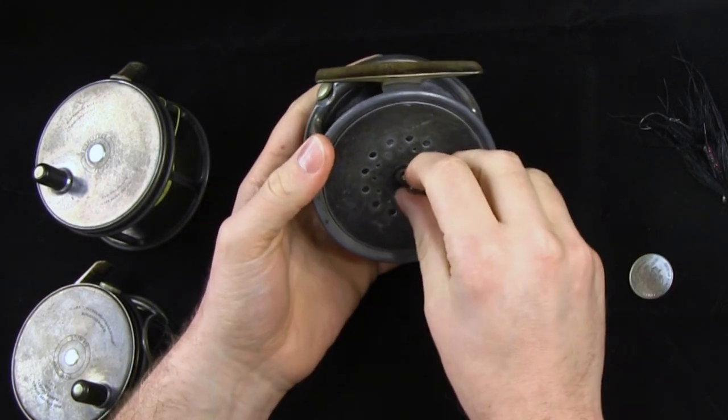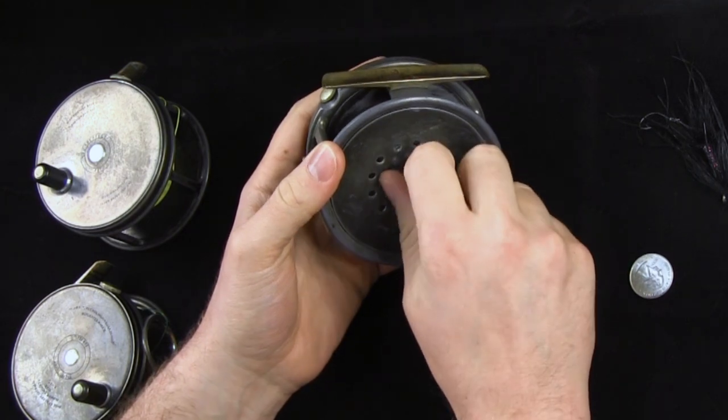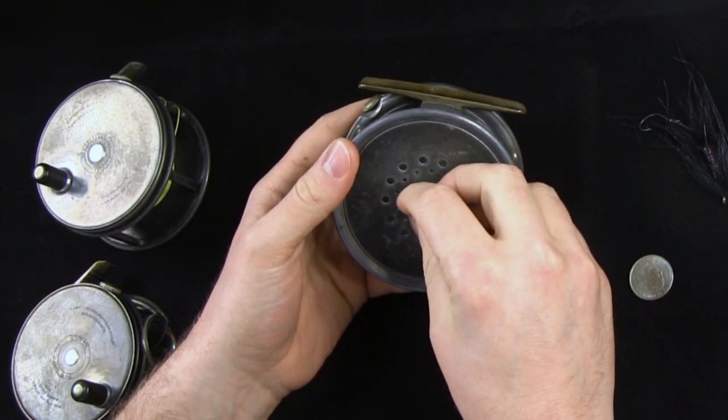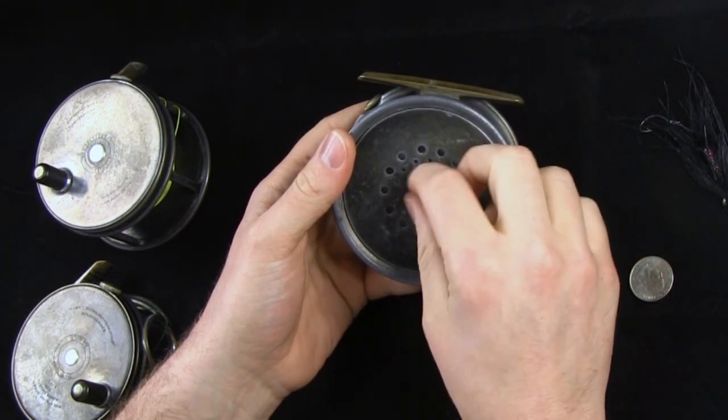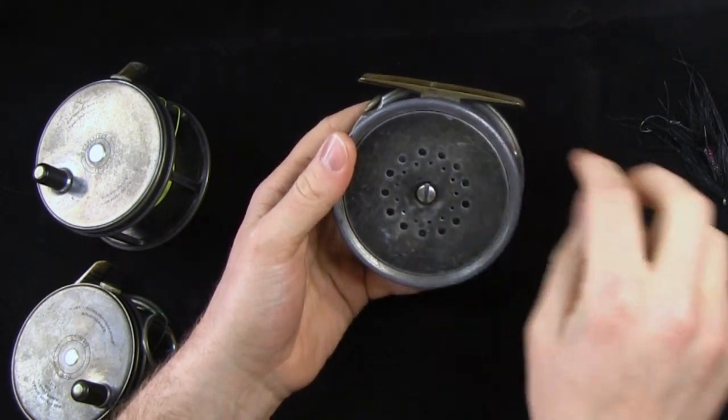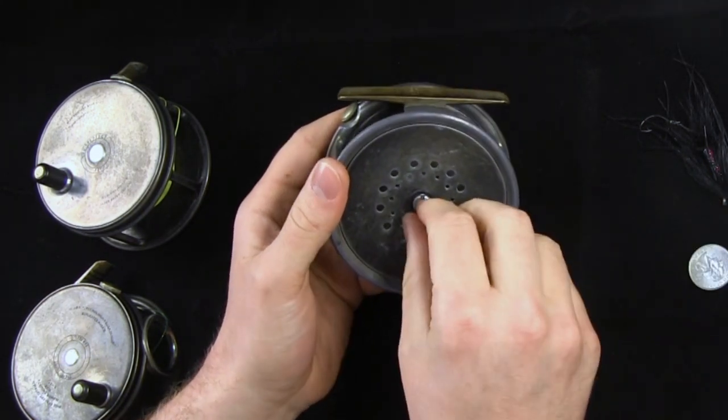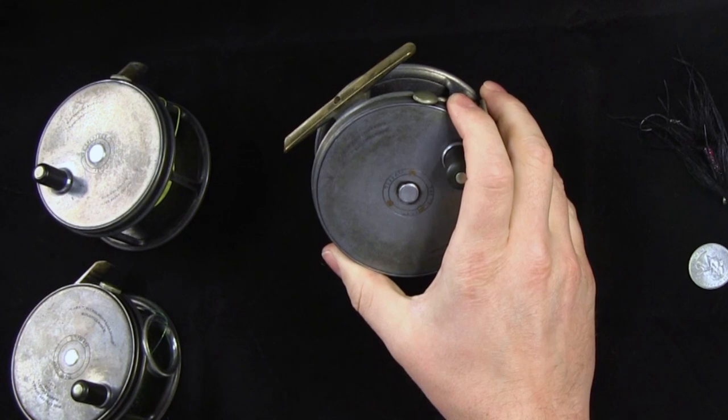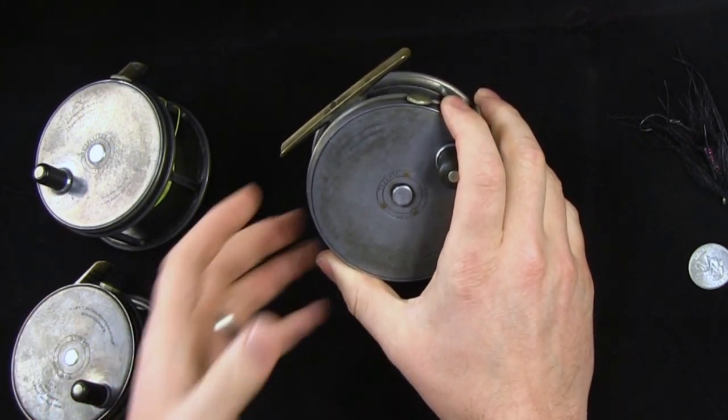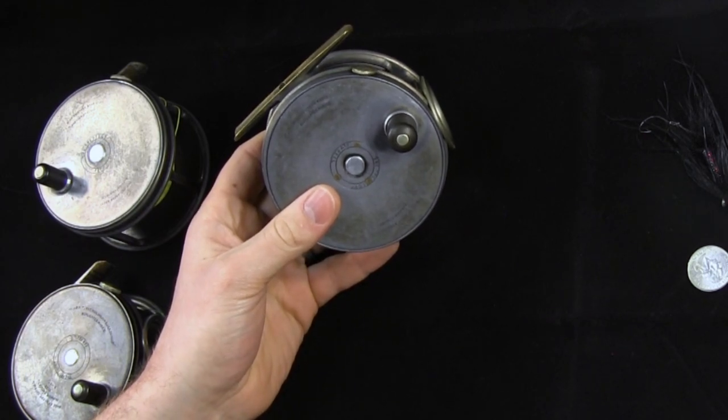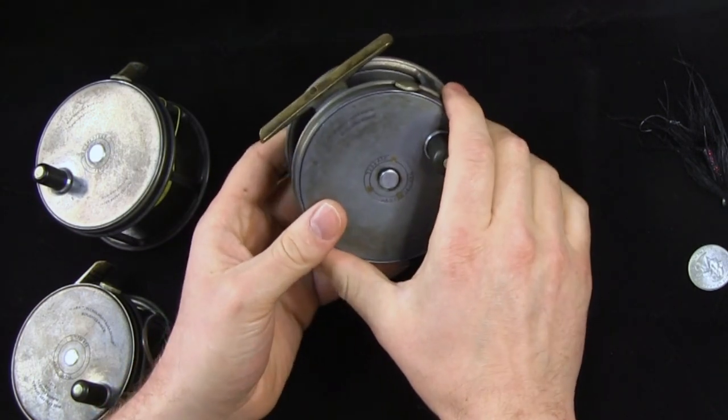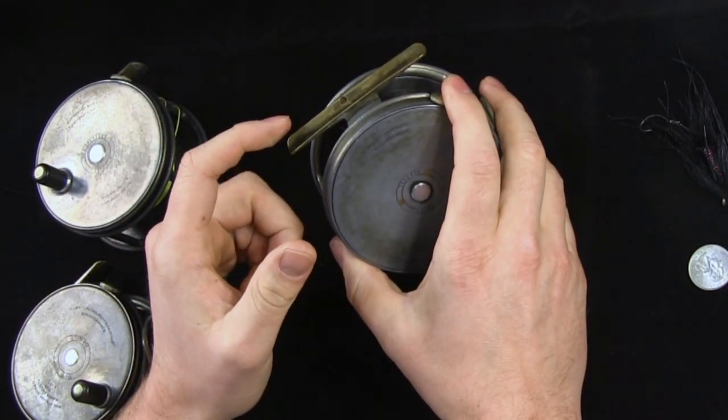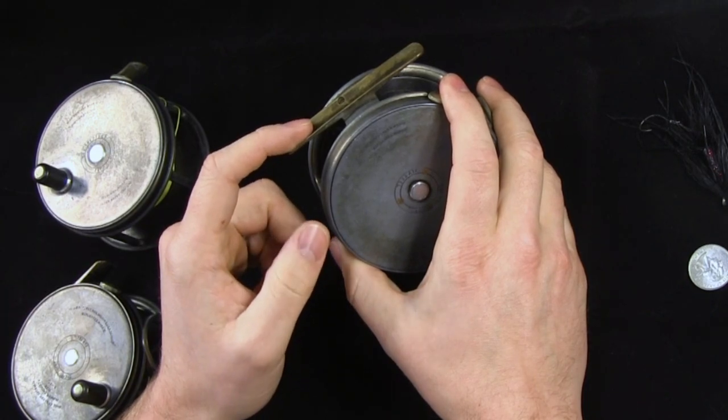One thing that is different about these reels is you'll start to see a lot of them where the foot has been filed for modern reel seats. What happens is guys get these reels and they'll start to want to put them on a modern rod. Some of the older salmon rods had kind of slide cork rings so they could fit any size reel foot. With modern ways, they've kind of come to the standardized reel sizes. These actually become kind of hard to find rods to fish these on.